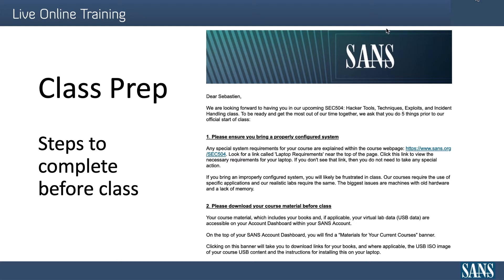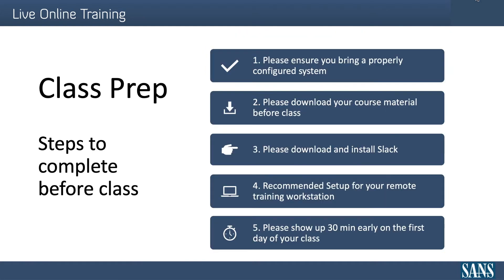The five steps are: one, bring a properly configured system to class. The number one source of student frustration and dissatisfaction with a class at SANS is not being able to complete class exercises due to an improperly configured system.